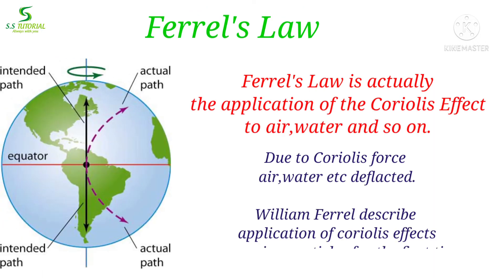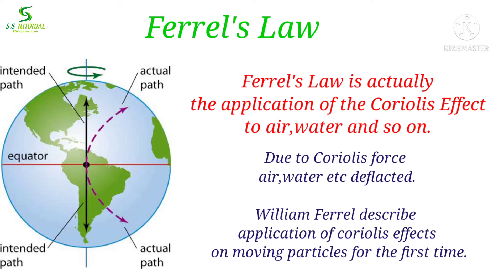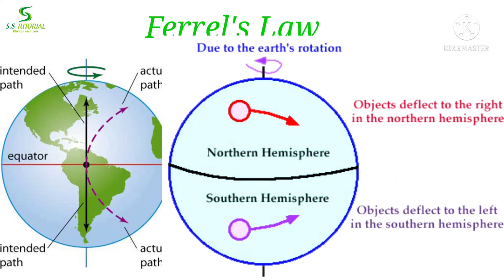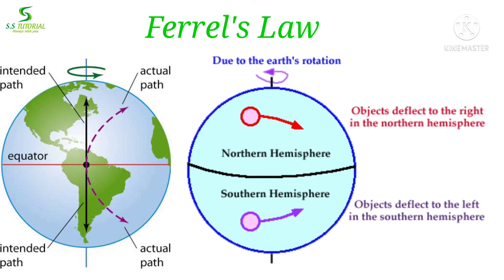Now let's learn about Farrell's law. Farrell's law is actually the application of the Coriolis effect to air, water, and so on. Due to Coriolis force, deflection occurs in particles which are in motion like air and water. American meteorologist William Farrell described the application of the Coriolis effect on moving particles for the first time. According to Farrell, moving particles like air and wind deflect to the right side in the northern hemisphere and to the left side in the southern hemisphere due to Coriolis force. This law is widely known as Farrell's law.